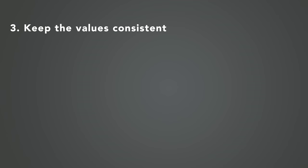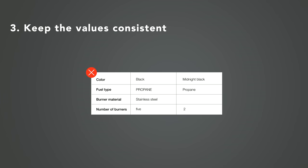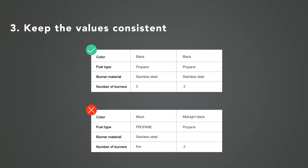Make sure that the values of the attributes for each option are consistent. For example, you don't want to have missing attributes, incomplete information, or inconsistent formatting for metadata. Users notice when the values of attributes in comparison tables are not right. Bad content can really quickly make an otherwise good comparison table totally useless.